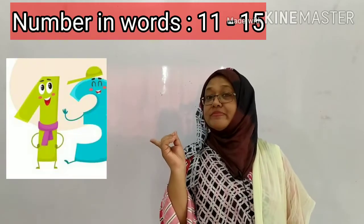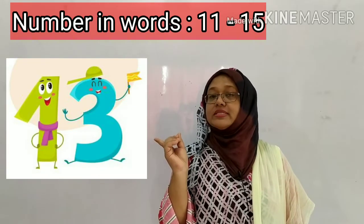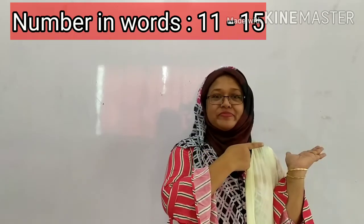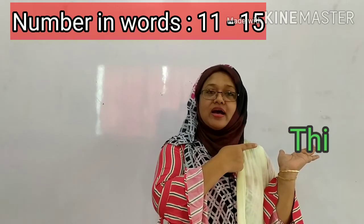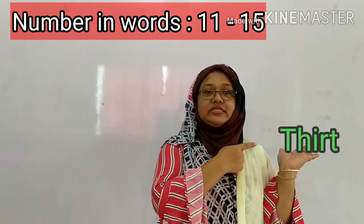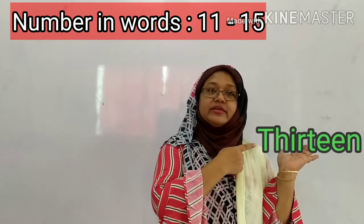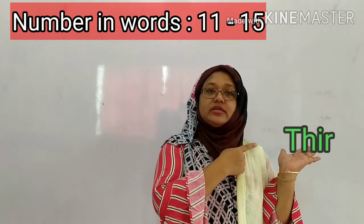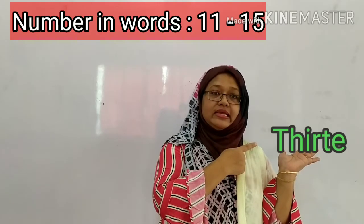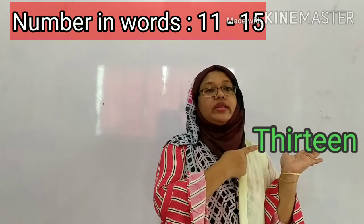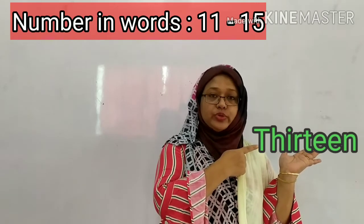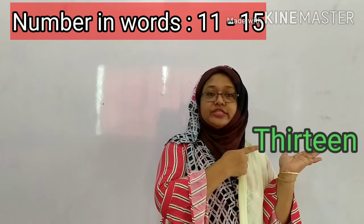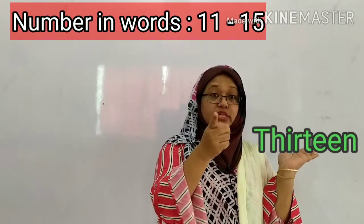Now see the number — which number is this? This is number 13. Right? And 13 spelling is T-H-I-R-T-E-E-N. 13. When you put two E together, it sounds like 'E.' Say with me: 13. Now, you will spell the number.